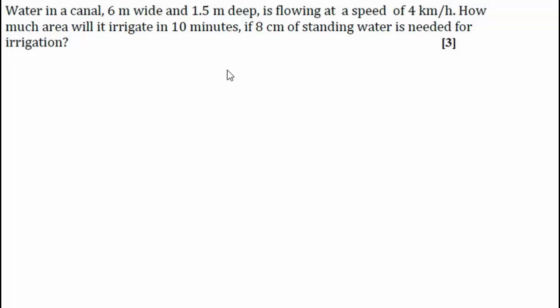Here is another important question. It says that water in a canal 6 meter wide and 1.5 meter deep is flowing at a speed of 4 km per hour. So as it is obvious from the question, the canal shape is cuboidal. So it is 6 meter wide and 1.5 meter deep, and water is flowing at a speed of 4 km per hour.